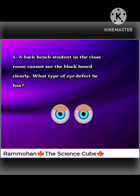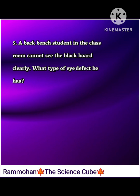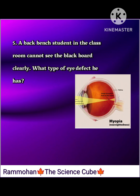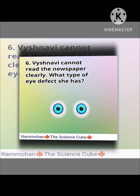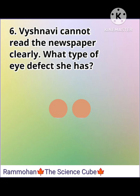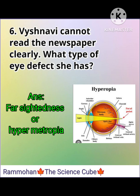Fifth question: a back-bench student in the classroom cannot see the blackboard clearly — what type of eye defect does he have? Answer: nearsightedness, myopia.